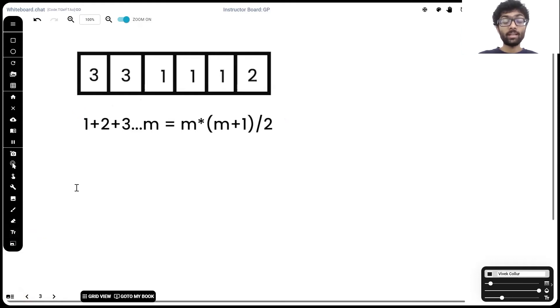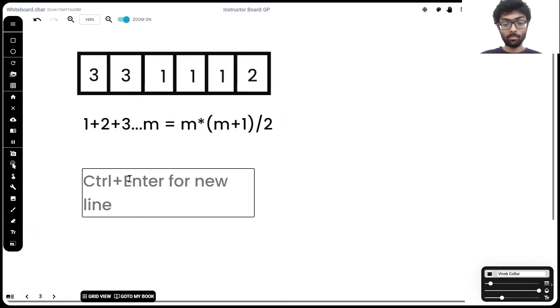So if we were to replace m with n minus one, the formula would become one plus two plus three up until n minus one is equal to n minus one times n by two. This is the formula we're going to use.